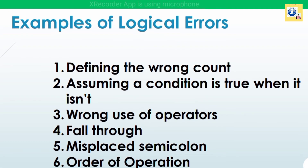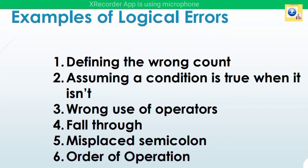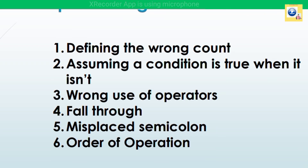Now let's discuss logical errors. As discussed earlier, logical errors are difficult to detect because the compiler will not catch them — especially in long programs or big projects. Common examples include: defining the wrong count, where a counter variable has the wrong value; and assuming a condition is true when it is actually false. Also, the wrong use of an operator — for example, using a division symbol where multiplication was needed.